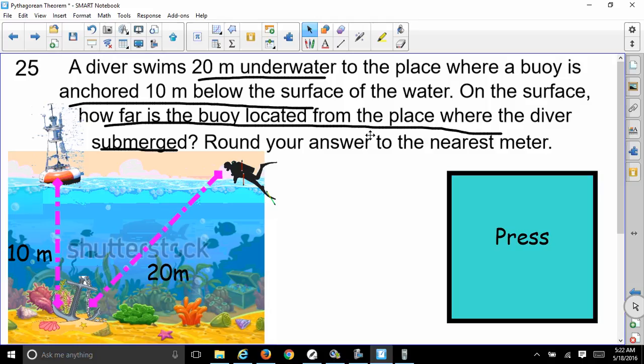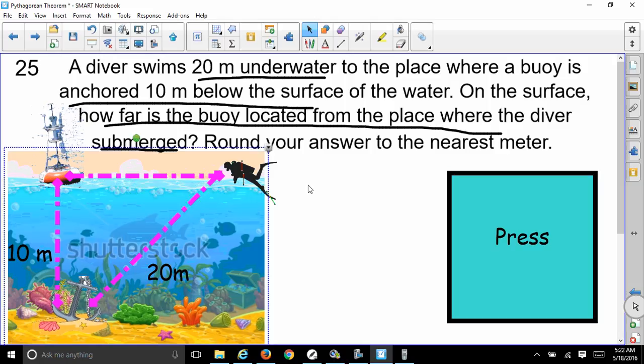Now let's see what else we got. The buoy is anchored 10 meters below the surface of the water. So here is the anchor, and it's going to be anchored 10 meters below the surface of the water. So our water is here, so down here is where the anchor is. So I have another distance, 10 meters. So how far is the buoy located from the place where the diver submerged? So this gives us our last line right there. So we want to know how far. They didn't say how far it is, so we can call that X.